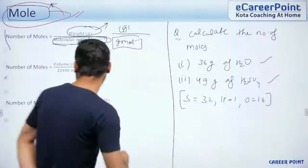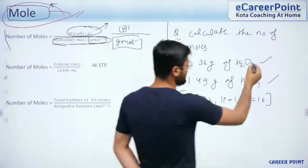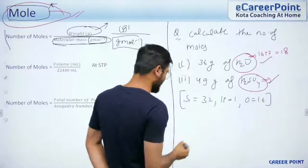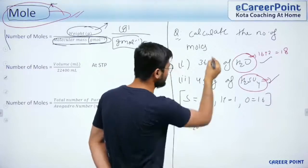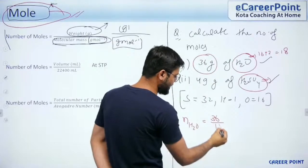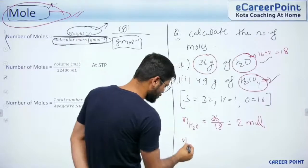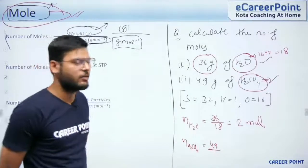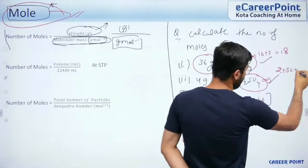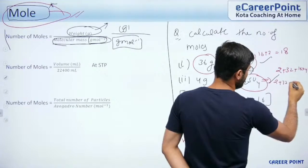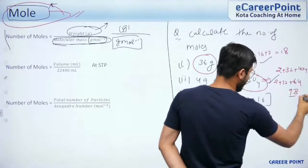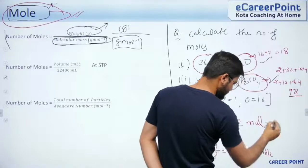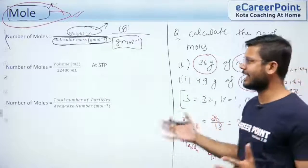For H2O: molecular mass = 16 + 2 = 18, so number of moles = 36/18 = 2 moles. For H2SO4: molecular mass = 2 + 32 + (16 × 4) = 2 + 32 + 64 = 98, so number of moles = 49/98 = 0.5 moles. This is how we calculate the number of moles.